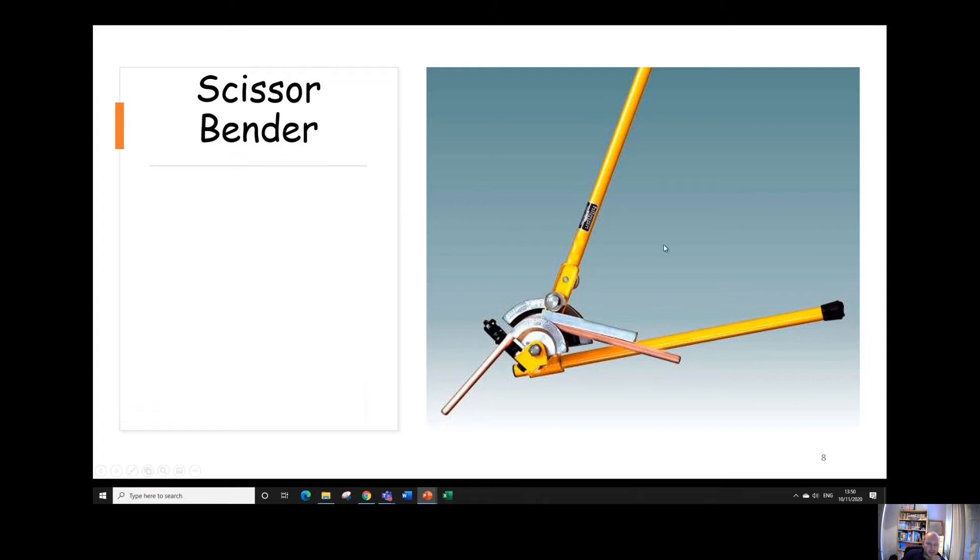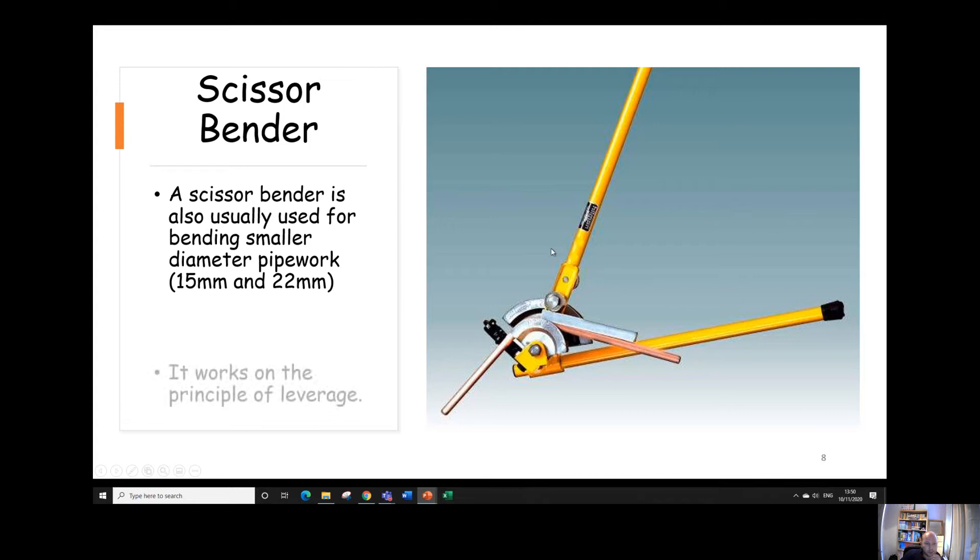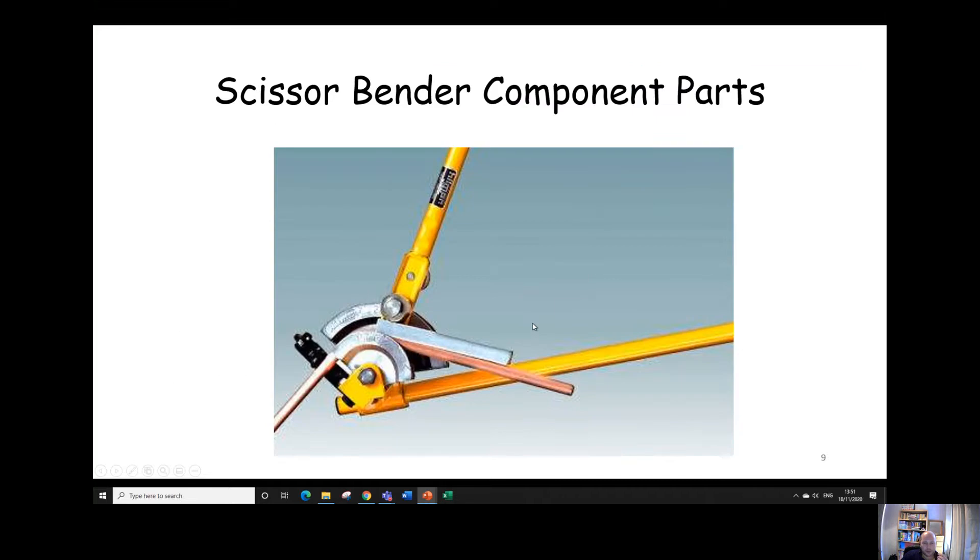This here is a scissor bender. We use it for bending 15 and 22 mil and we're going to look at how it works which uses the principle of leverage. It's got these two long legs on them to describe them as levers. And we use those, we pull them round with the other parts to make sure that we get a nice smooth bend.